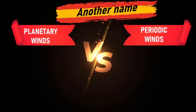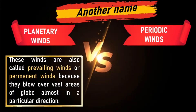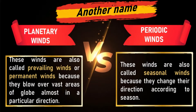Planetary winds are also called prevailing winds or permanent winds because they blow over vast areas of the globe almost in a particular direction. Periodic winds are also called seasonal winds because they change their direction according to the season.